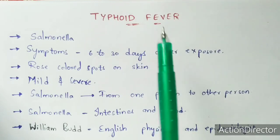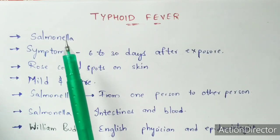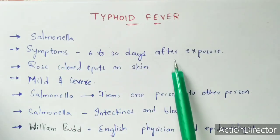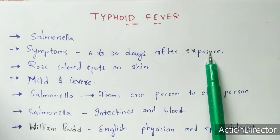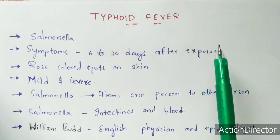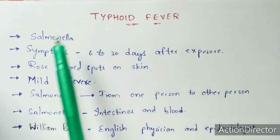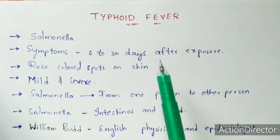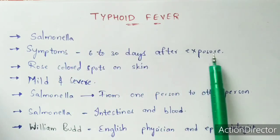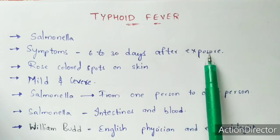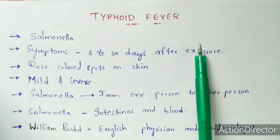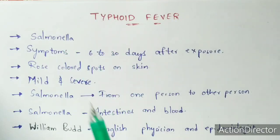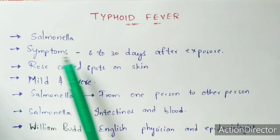Coming to the symptoms, the symptoms can be seen up to 6 to 30 days after the exposure. Exposure means the infection of the bacteria — here, Salmonella. The Salmonella will enter into the human body, and that is called exposure. After the exposure, 6 to 30 days of symptoms can be seen in the infected person.